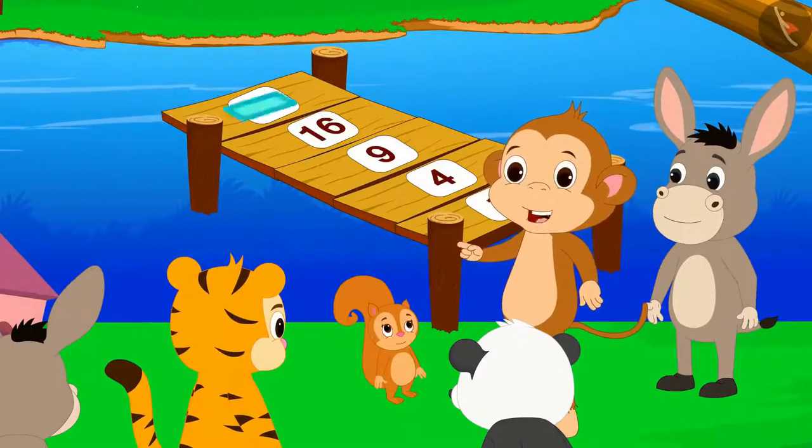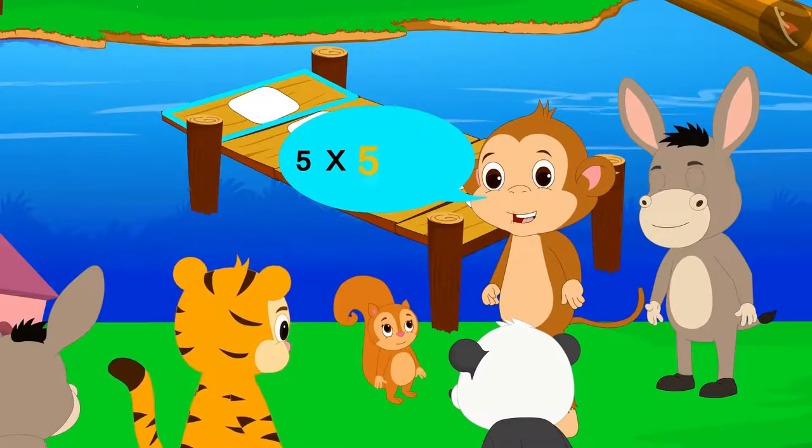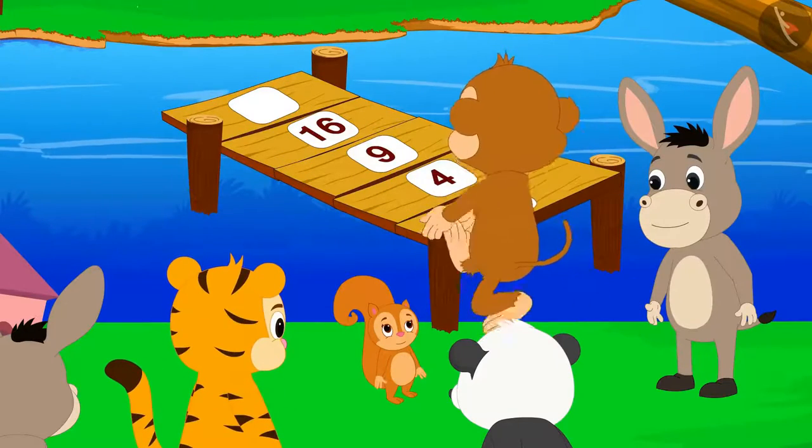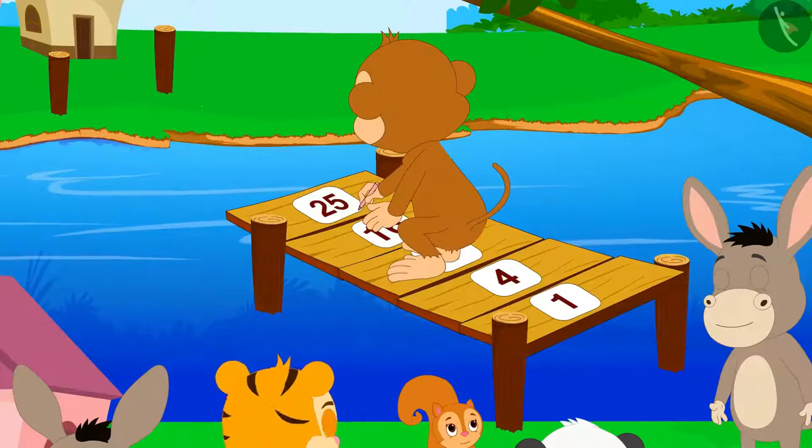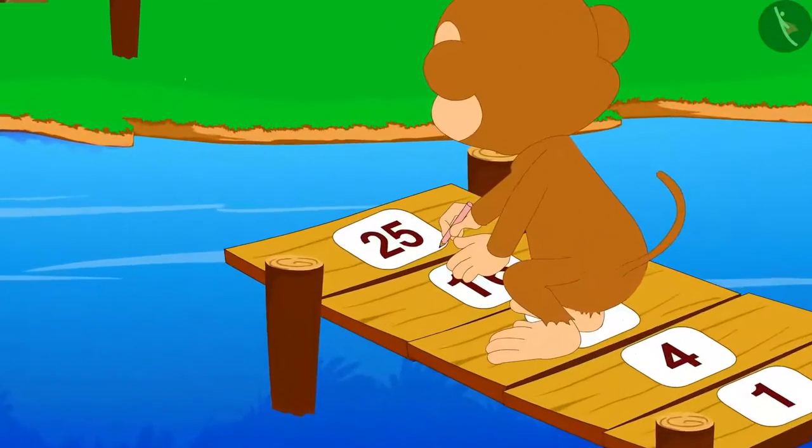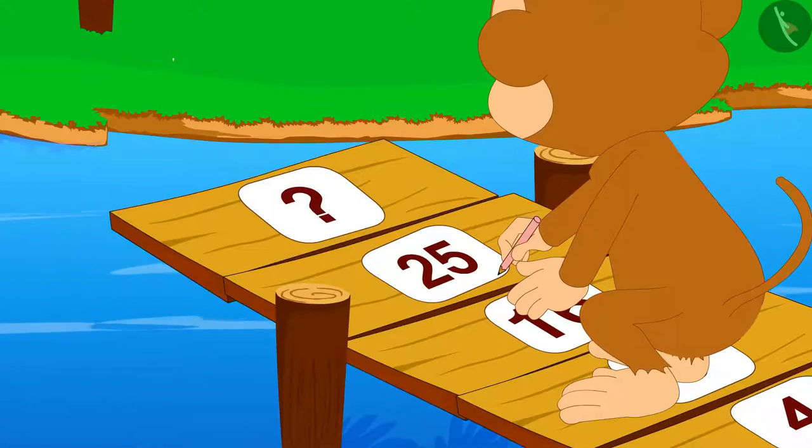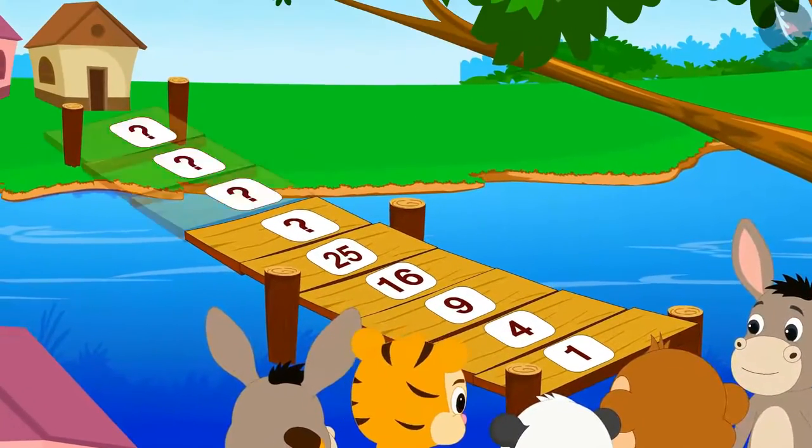That would mean the number written on this fifth plank would be five times five, twenty-five. Saying this, Babban immediately wrote twenty-five on the fifth plank. As soon as Babban wrote the number, the next plank of the bridge got added. Now, all the villagers started finding the numbers of the next planks.